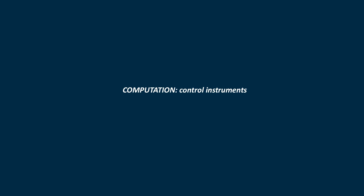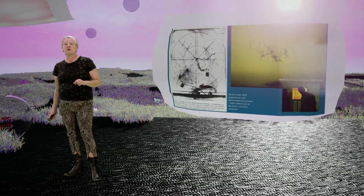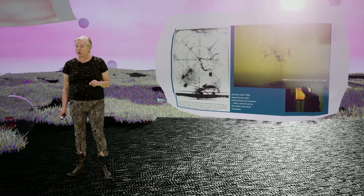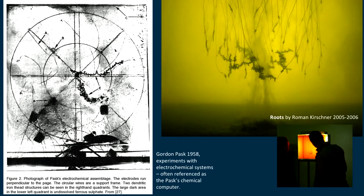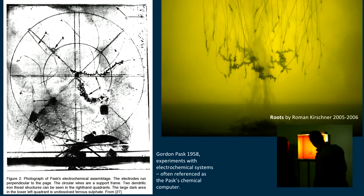In the next few slides I'll show a couple of examples from historical devices that use liquids — computational devices. The first is quite well known: cybernetician Gordon Pask was developing a chemical computer using platinum electrodes in a liquid of ferrous sulfate. When you run a current through it, it starts accumulating and self-organizing, growing tentacles — what Pask calls the chemical ears and eyes of the system.